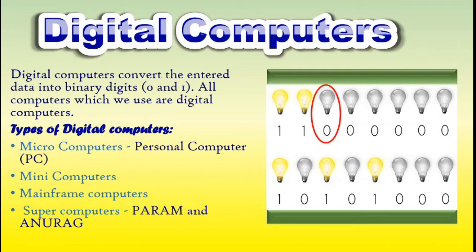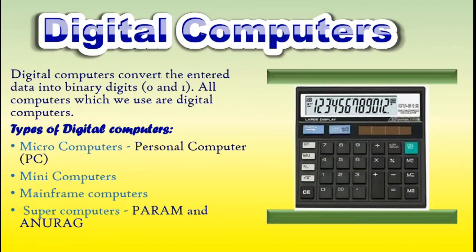A digital computer can be used to process numeric as well as non-numeric data. It can perform arithmetic operations like addition, subtraction, multiplication, and division, and also logical operations. Most of the computers available today are digital computers, and the most common example of a digital computer is a calculator. The results of digital computers are more accurate than the results of analog computers.